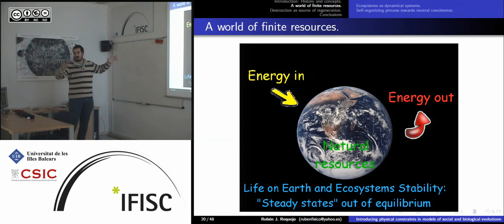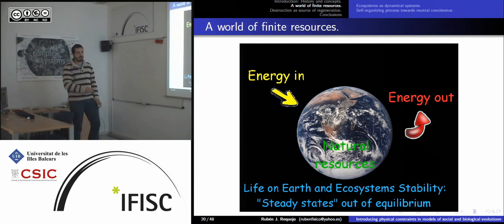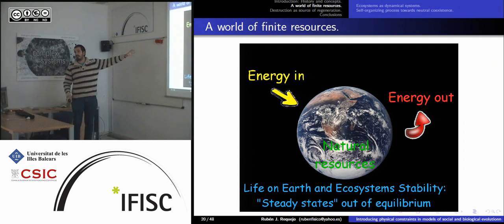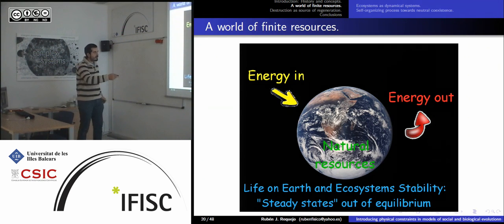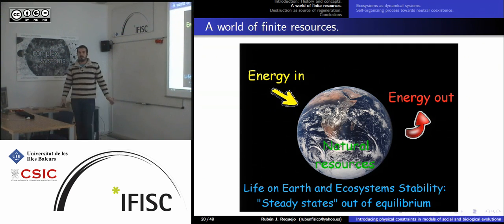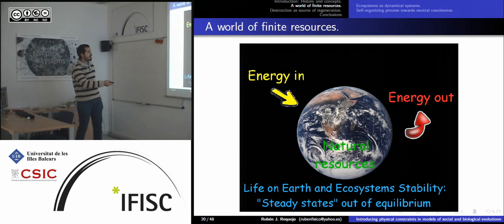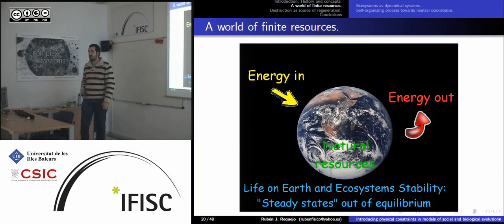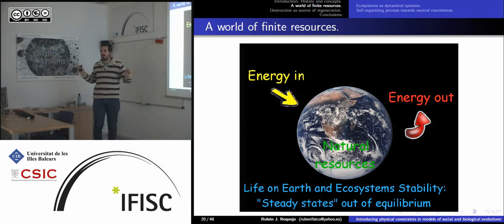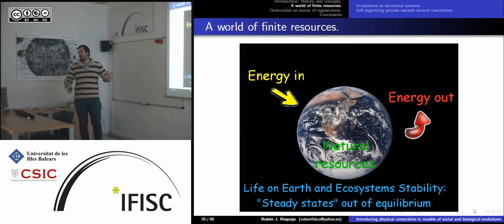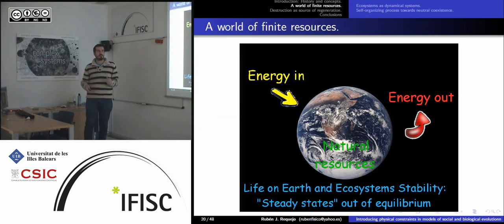If we look at an ecosystem, a very schematic representation shows there is a flow of energy (or resources) into the system and a flow out — assuming the system is in equilibrium, since no system grows forever. There are natural resources in the environment. Life on Earth could be seen as a steady state in equilibrium of these resource flows.